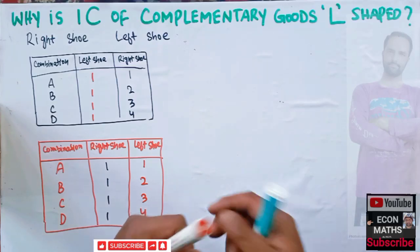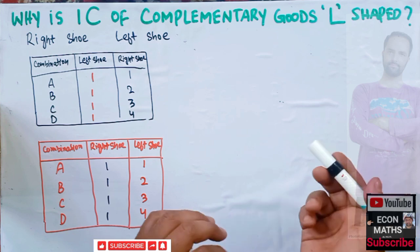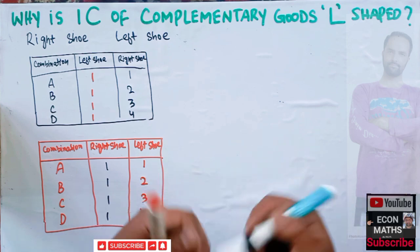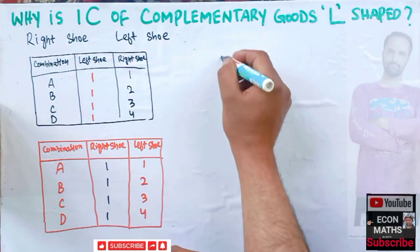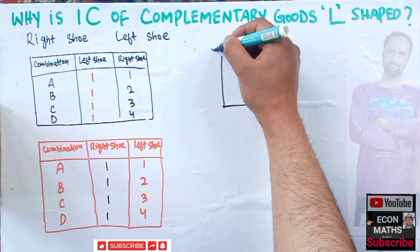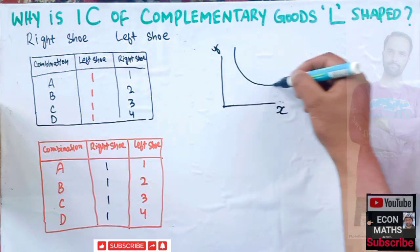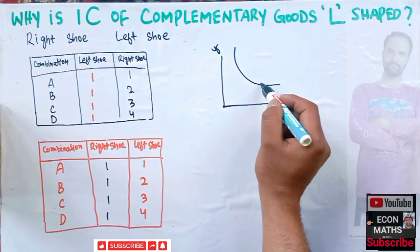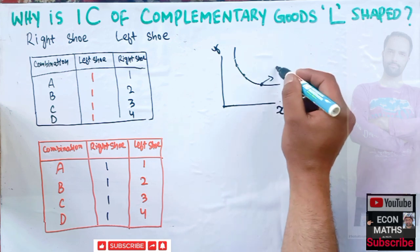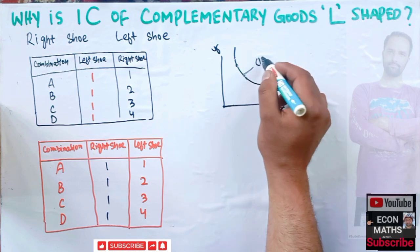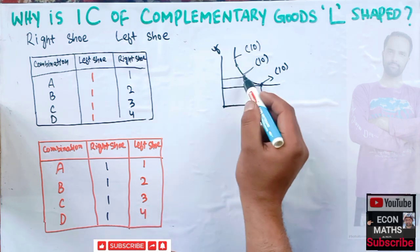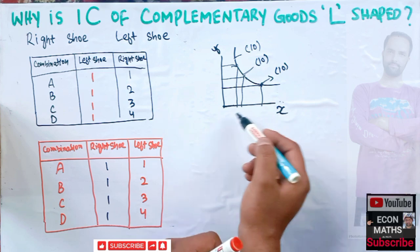In this video we will learn why the indifference curve of complementary goods is L-shaped. An indifference curve is a curve at every point of which utility remains the same. If we have one good on the x-axis and another good on the y-axis, on every point of the indifference curve our utility is constant. So we can have different combinations of X and Y that give us the same level of utility.